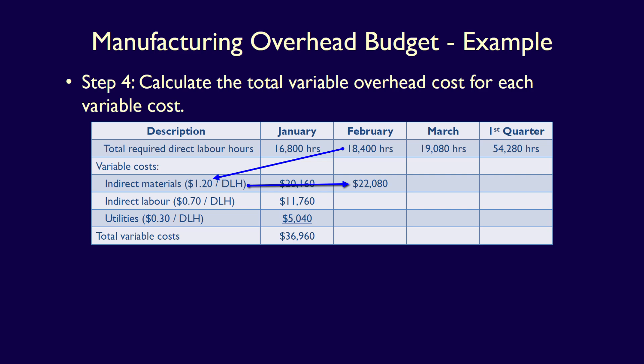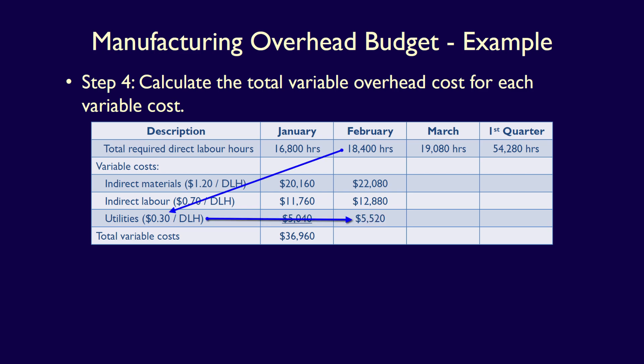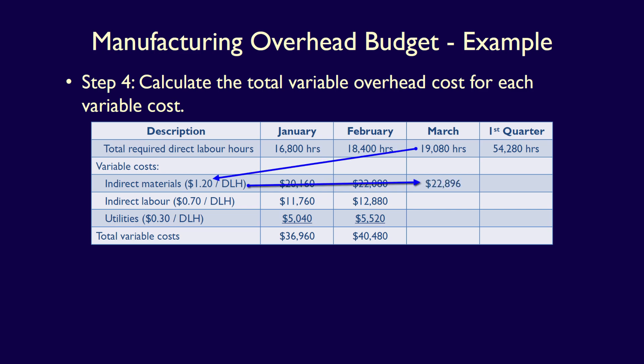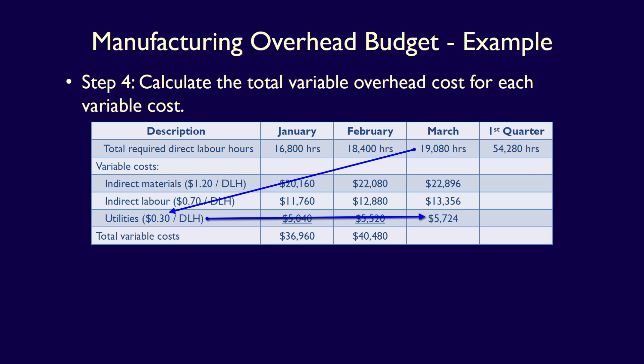Moving on to March, 19,080 hours multiplied by $1.20 per direct labour hour gives indirect materials of $22,896. 19,080 hours multiplied by $0.70 per direct labour hour gives indirect labour of $13,356. 19,080 hours multiplied by $0.30 per direct labour hour gives utilities of $5,724. Total variable costs for March: $41,976.